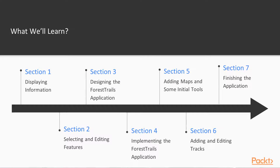In Section 3, Designing the Forest Trails application, we'll start working on the major application for this course, which is called Forest Trails. In this section, we will look at the business requirements for our program and see how these requirements can be met using a custom-written, standalone PyQGIS-based application. In Section 4, Implementing the Forest Trails application, we'll start work on our application, creating the overall program structure and defining the application's user interface. In Section 5, Adding Maps and some initial tools, we'll set up a base map to use for our program and then implement the PanMap tool in track editing modes.